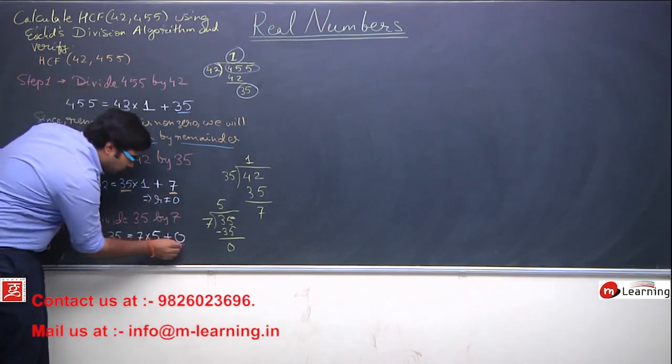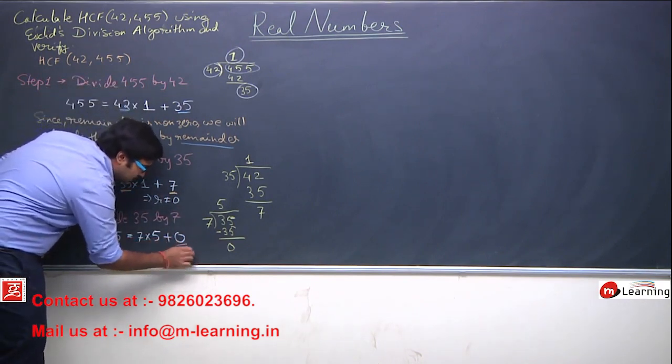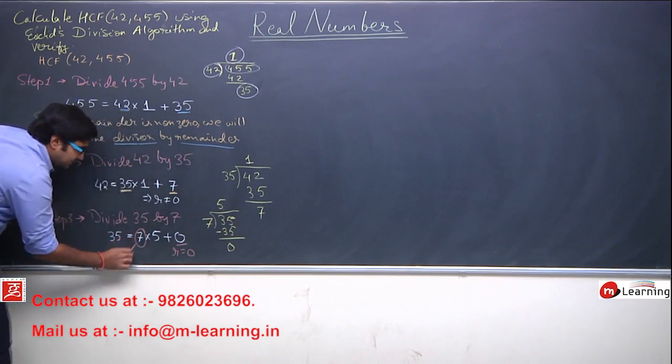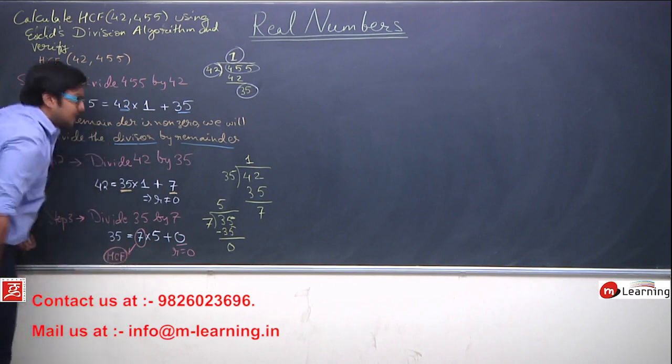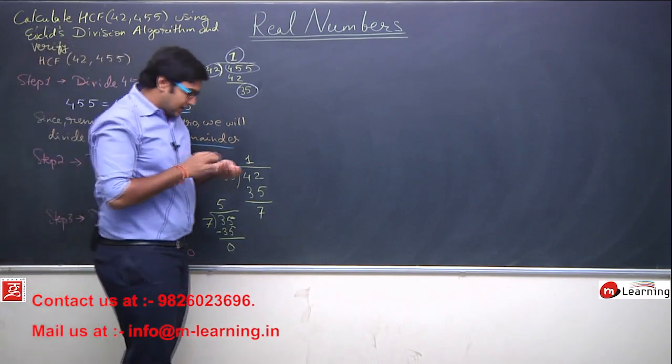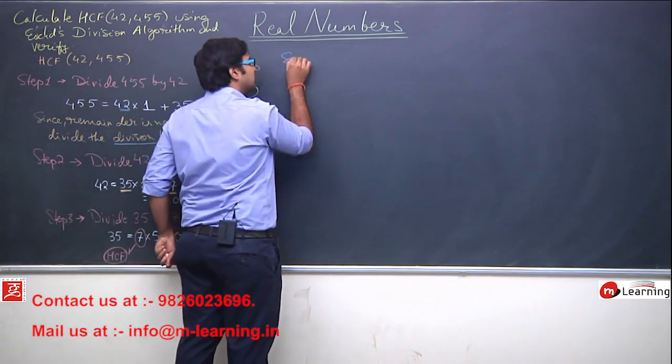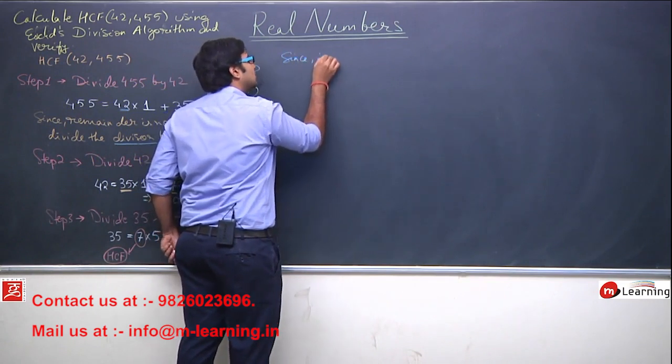If remainder is 0, remainder is equals to 0, then this 7, this divisor will be the highest common factor or the HCF. So I can write that since in step 3,